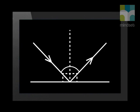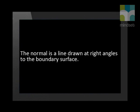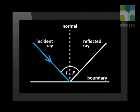To remind ourselves about the law of reflection, look at this animation of a reflected ray of light. The dotted line represents the normal — an imaginary line drawn at right angles to the boundary surface. The incident ray travels towards the boundary, which can be a flat mirror, the surface of a lake, or any plane reflective surface. The incident angle is the angle between the incident ray and the normal, not the angle between the ray and the surface.